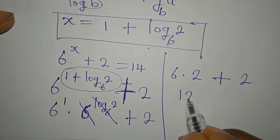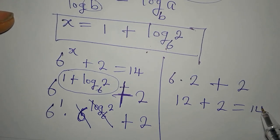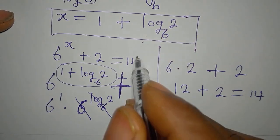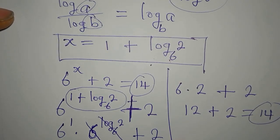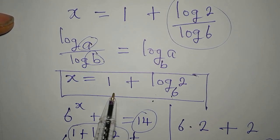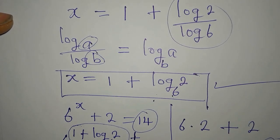6 times 2 is 12, then plus 2 and that is 14. And it is 14 that we had on the right hand side of the equation. So this is the confirmation that x equals 1 plus log 2 to base 6 satisfies the equation.